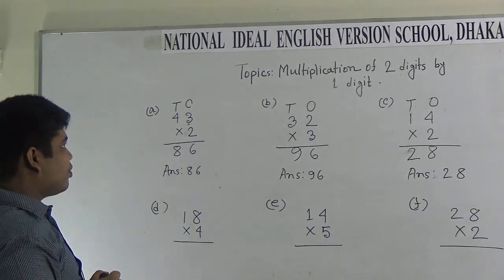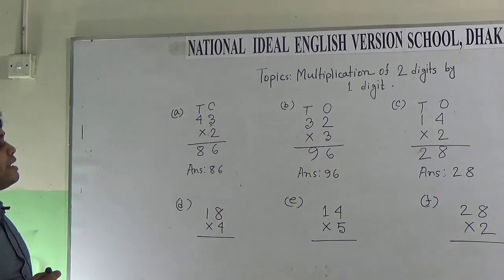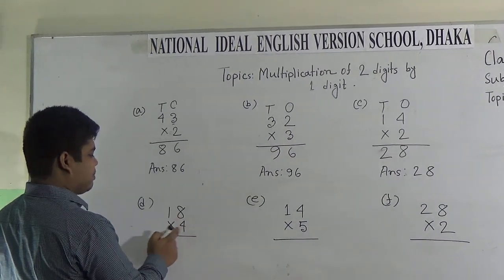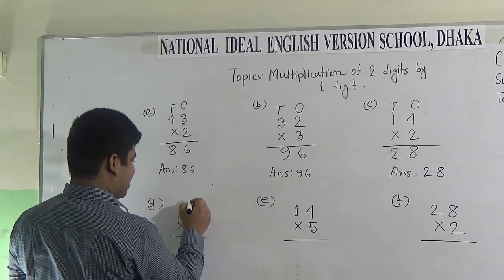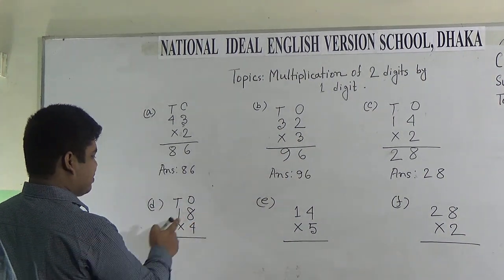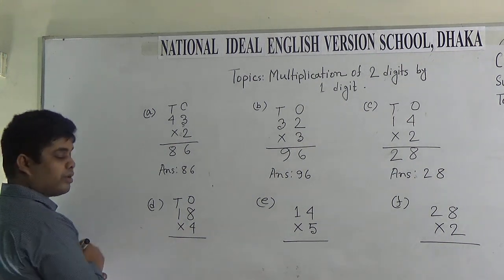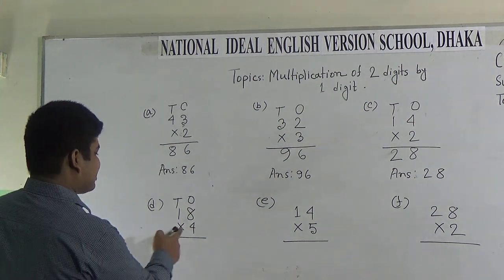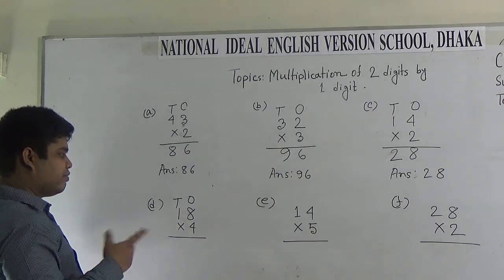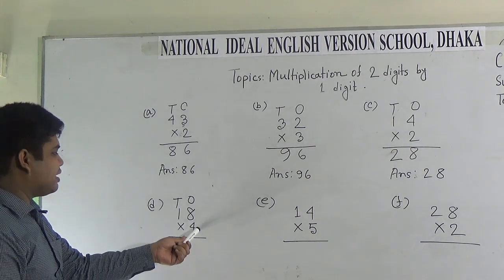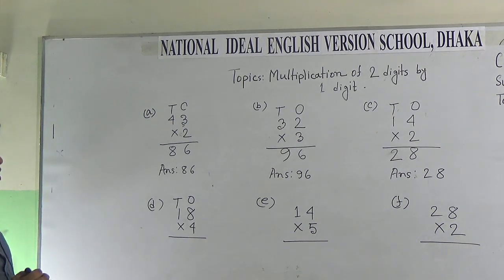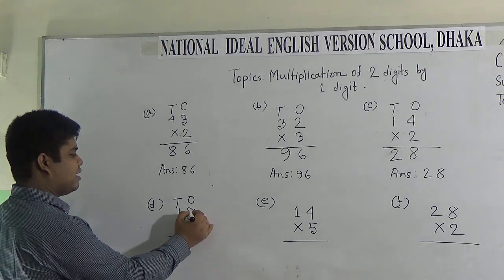Now, this time we multiply a 2-digit number by a single digit number with carrying. So, 18 × 4. Here, 8 is in the 1's place and 1 is in the 10's place. First of all, we multiply 8 by 4, then we multiply 1 by 4. We count the times table of 4: 4 1's are 4, 4 2's are 8, 4 3's are 12, 4 4's are 16, 4 5's are 20, 4 6's are 24, 4 7's are 28, and 4 8's are 32.